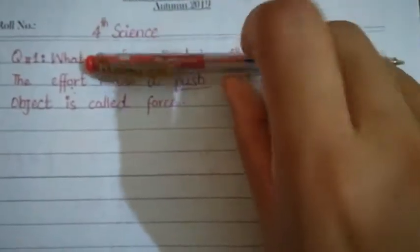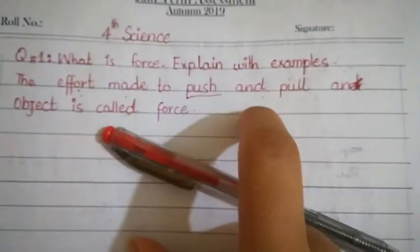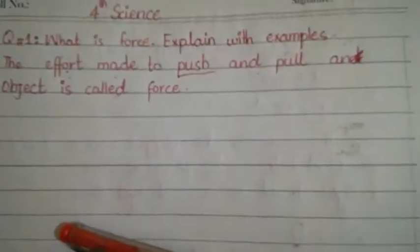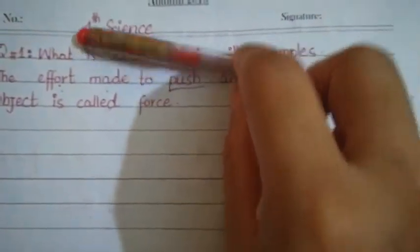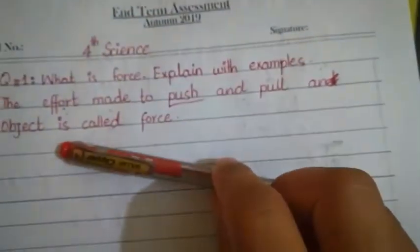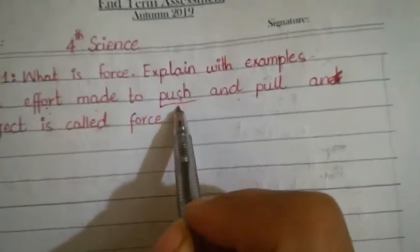اس کے علاوہ pull، pull مطلب اپنی طرف کھینچنا۔ اس کو pull کرنا، اگر میں اس کو اپنی طرف بھی کھینچوں گی تو بھی مجھے اس پہ force لگانی پڑے گی مجھے محنت کرنے پڑے گی اس پہ force لگا کے اس کو پیچھے کھینچنا ہوگا۔ تو یہ ہے آپ کا push and pull کسی چیز کو push کرنا ہو